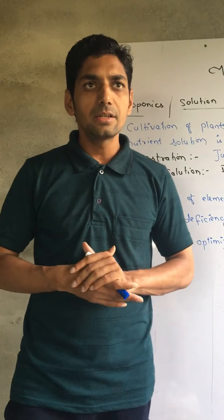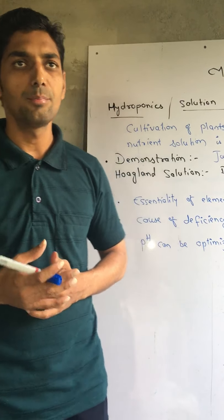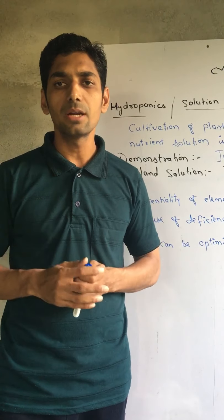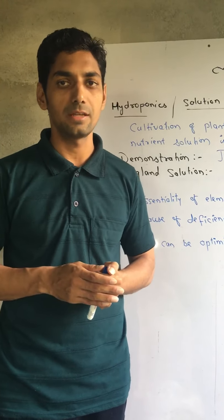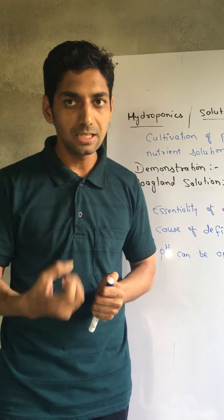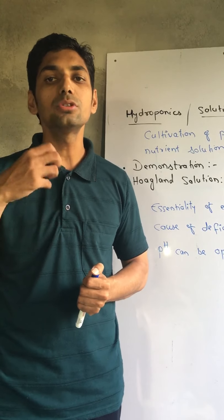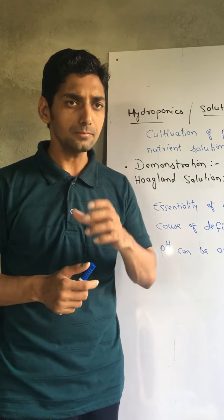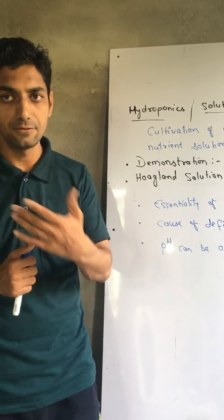For example, consider chlorosis, necrosis, premature leaf fall, etc. These are all examples of deficiency symptoms. That means, if plants don't get elements in the proper amount, then the plant shows some deficiency symptoms and some indications. Chlorosis, as we have said, is a deficiency symptom.